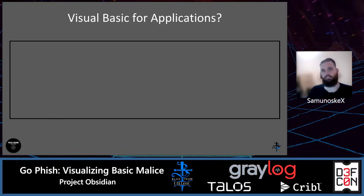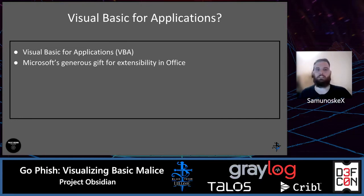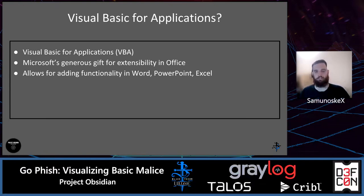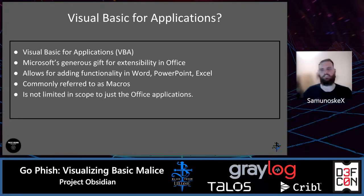Visual Basic for Applications — we call it VBA for short — is Microsoft's generous gift for extensibility in Office. It allows for adding functionality in Microsoft Word, PowerPoint, Excel, Access, Microsoft Project, or Publisher. It allows the file to interact with the underlying operating system or other Office applications to transfer data or do different things between applications automatically. That could be a good thing, but it more than likely is a bad thing. We refer to these functions as macros, and it's not limited in scope to just Office applications, which makes this a bigger issue.